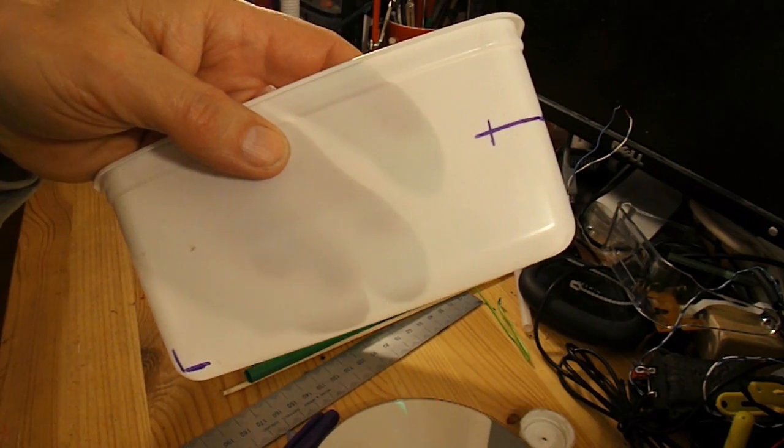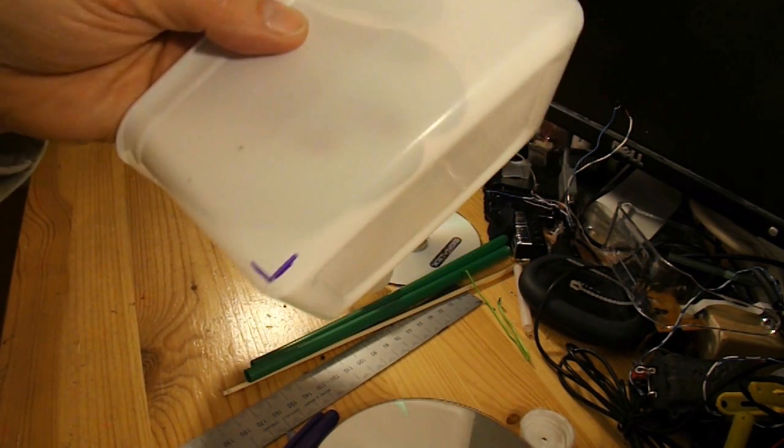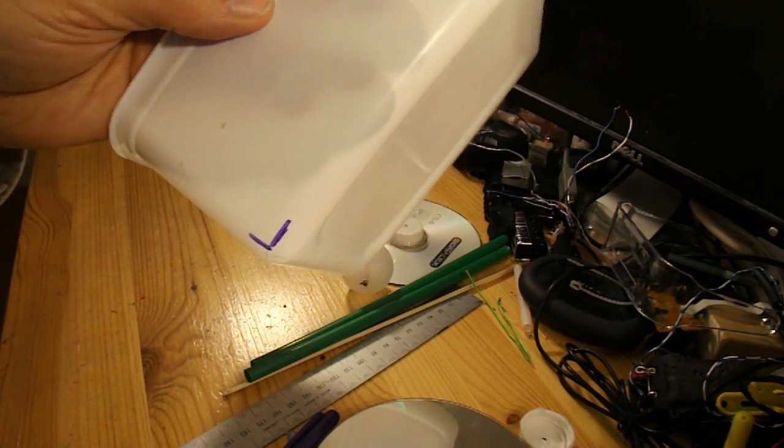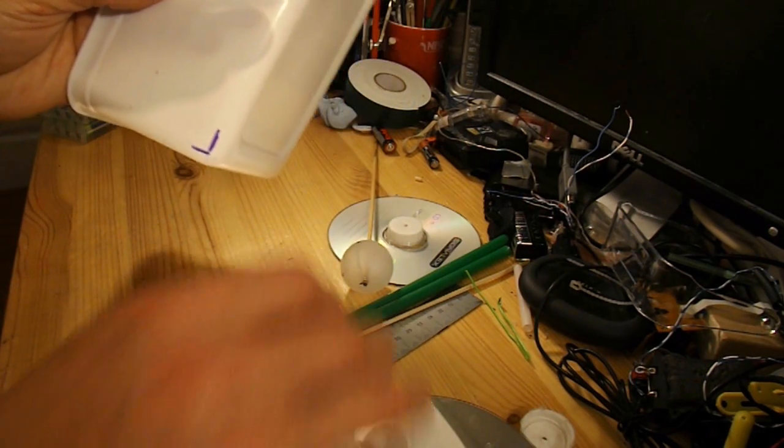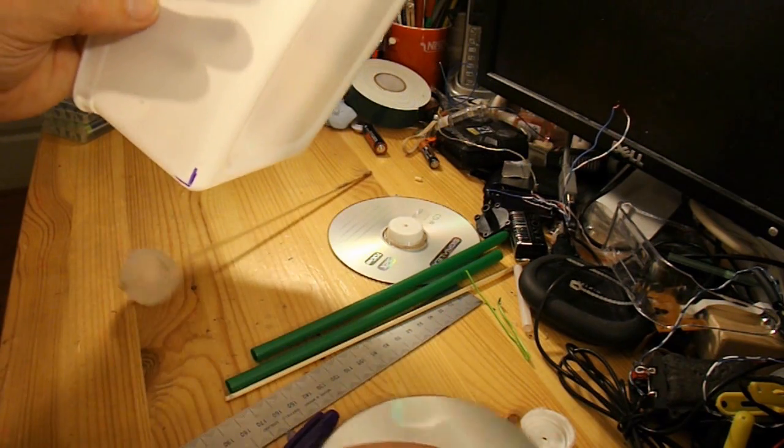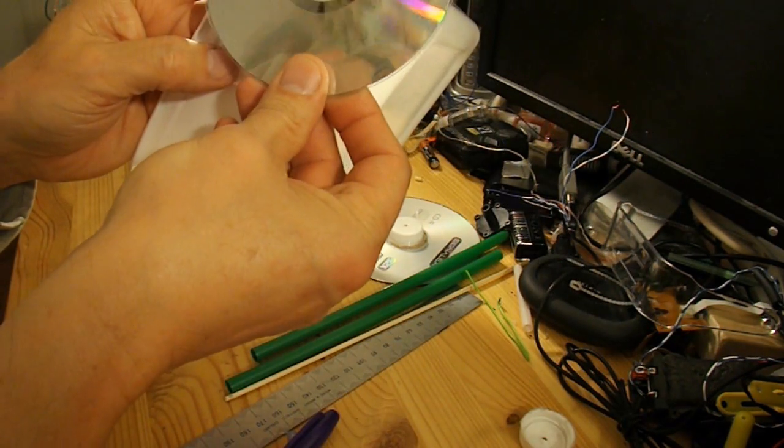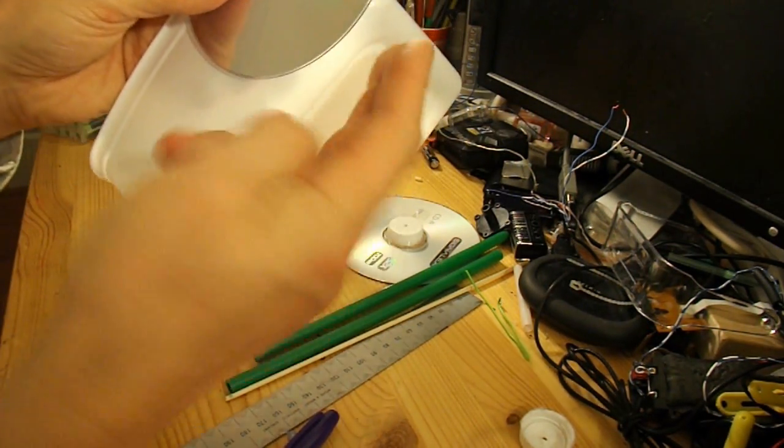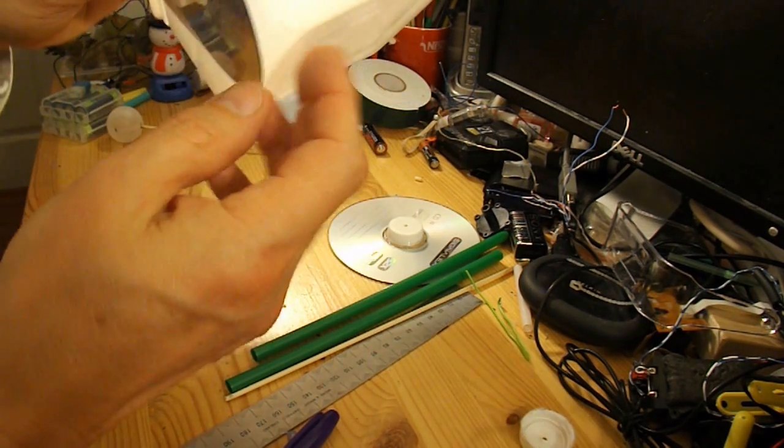I've marked up where I want to make the holes for the axles to go through. The front ones have got to be very near the bottom. And the back ones have got to make sure that the wheels clear the base.